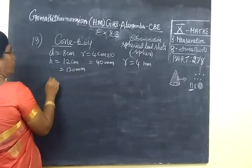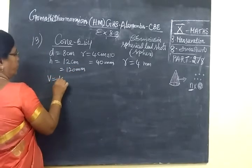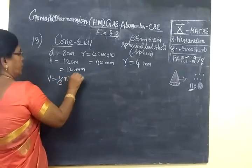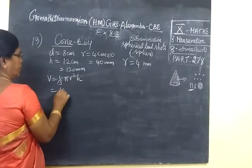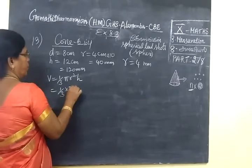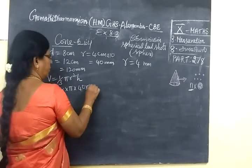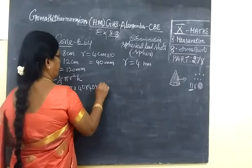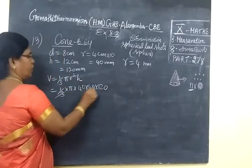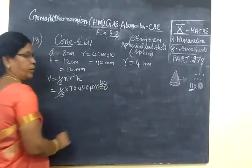So we calculate the volume of the cone using V equals 1/3 π r² h. So 1/3 π times 40 times 40 times 120.